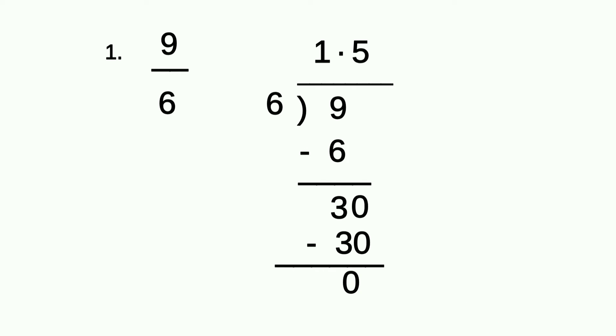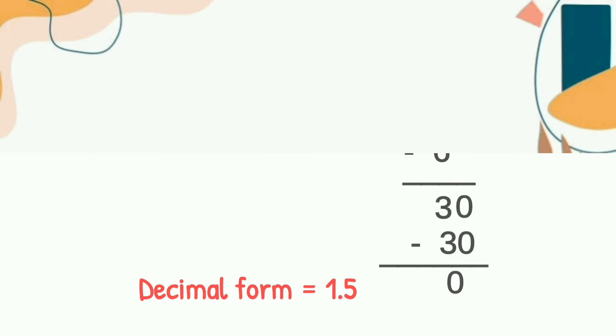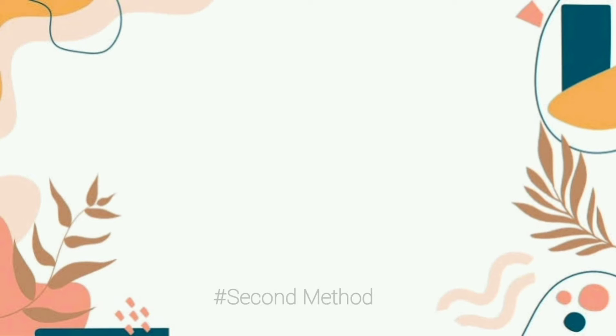In this method, we have to divide the numbers until we get the remainder 0. For that, we have to add the decimal point and add zeros in this method to get decimal form of that fraction.